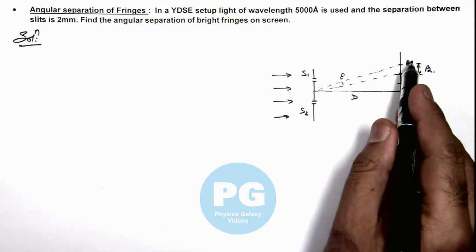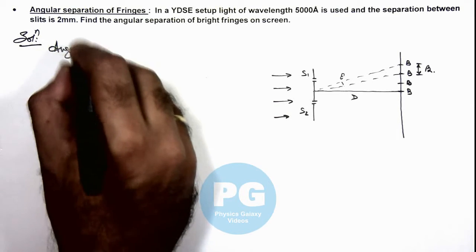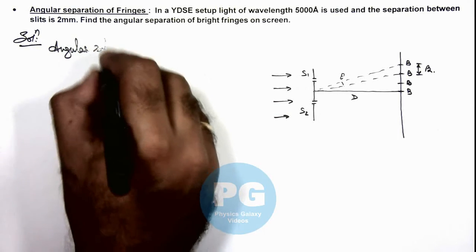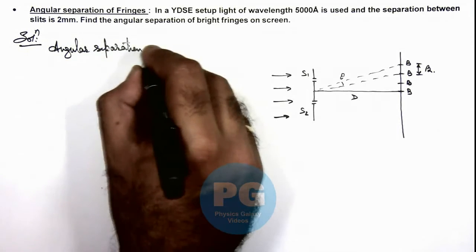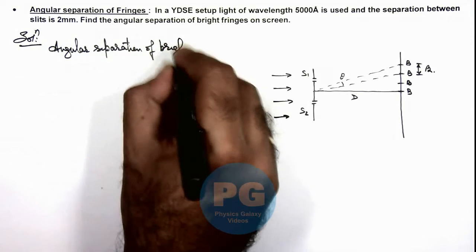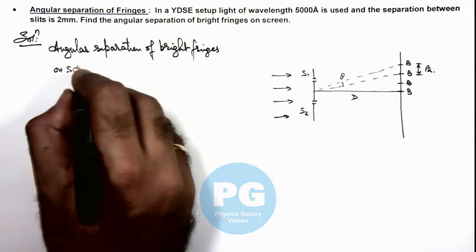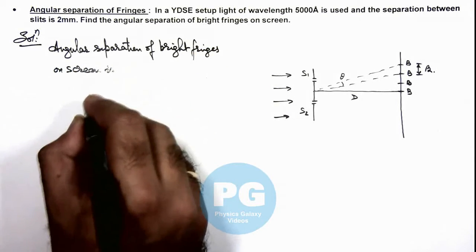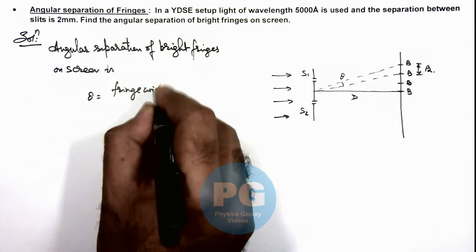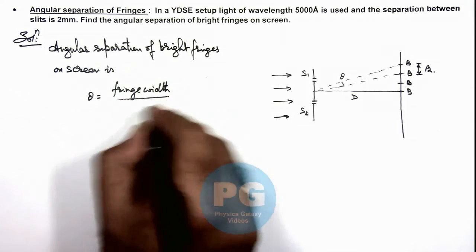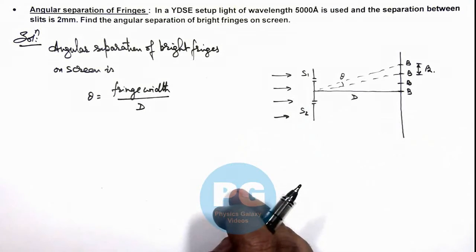Between 2 adjoining bright fringes, so we can write first the angular separation of bright fringes on screen is this theta. We can write as fringe width divided by capital D, which is the separation between a slit plane and the screen.